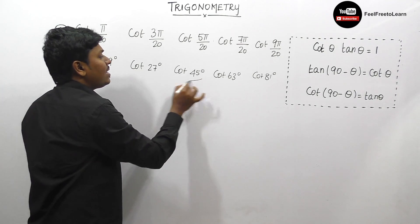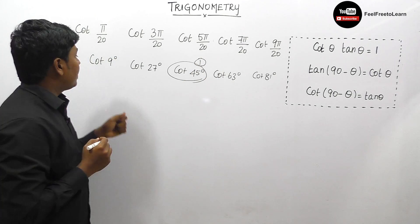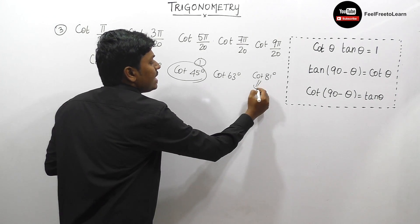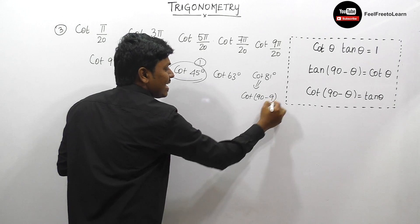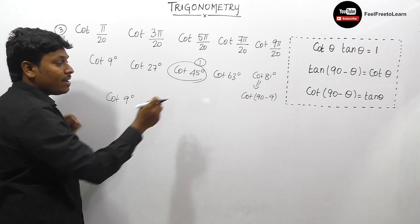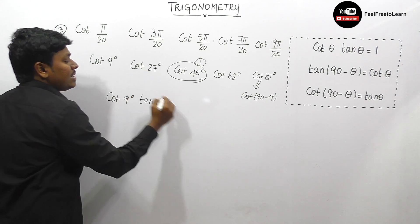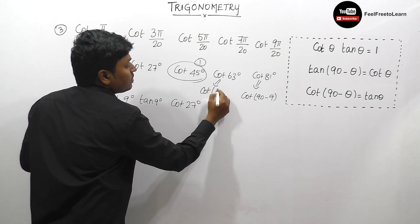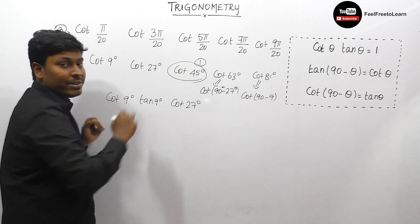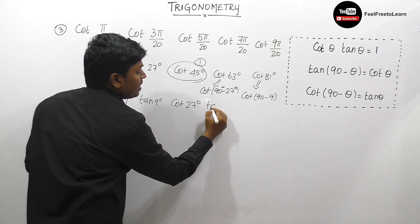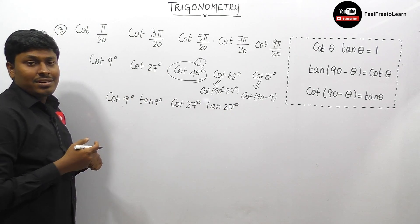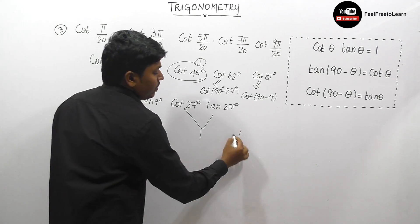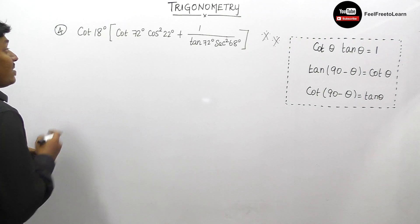Now applying the rule: cot 81° = cot(90° − 9°) = tan 9°, so cot 9° · tan 9° = 1. And cot 63° = cot(90° − 27°) = tan 27°, so cot 27° · tan 27° = 1. Therefore 1 · 1 · 1 = 1. The answer to question number 3 is 1.